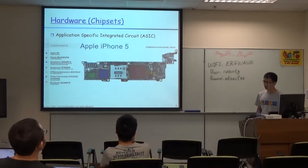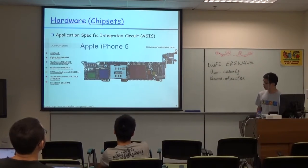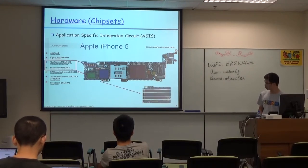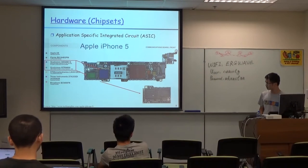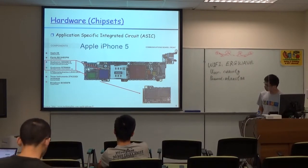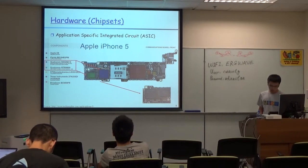Here I can show you an example — this is the communication board of an Apple iPhone 5. This board has many components: an application processor, and these two are radio-related, used to communicate with the cellular network. You can see them in red and green. This is a zoomed-in picture — you can see these two radio chipsets are very small, yet with these two components you can communicate with a base station.